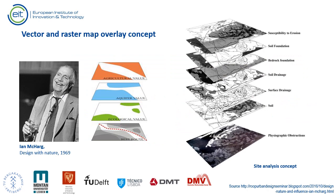A very common use of GIS is for site or location analysis. This concept was proposed by Ian McHarg and is based on overlying maps representing criteria of analysis. In McHarg's example, the criteria represented areas of ecological, environmental, and other values, and when combined produced a map of eco-physiographical obstructions for construction of a new road.